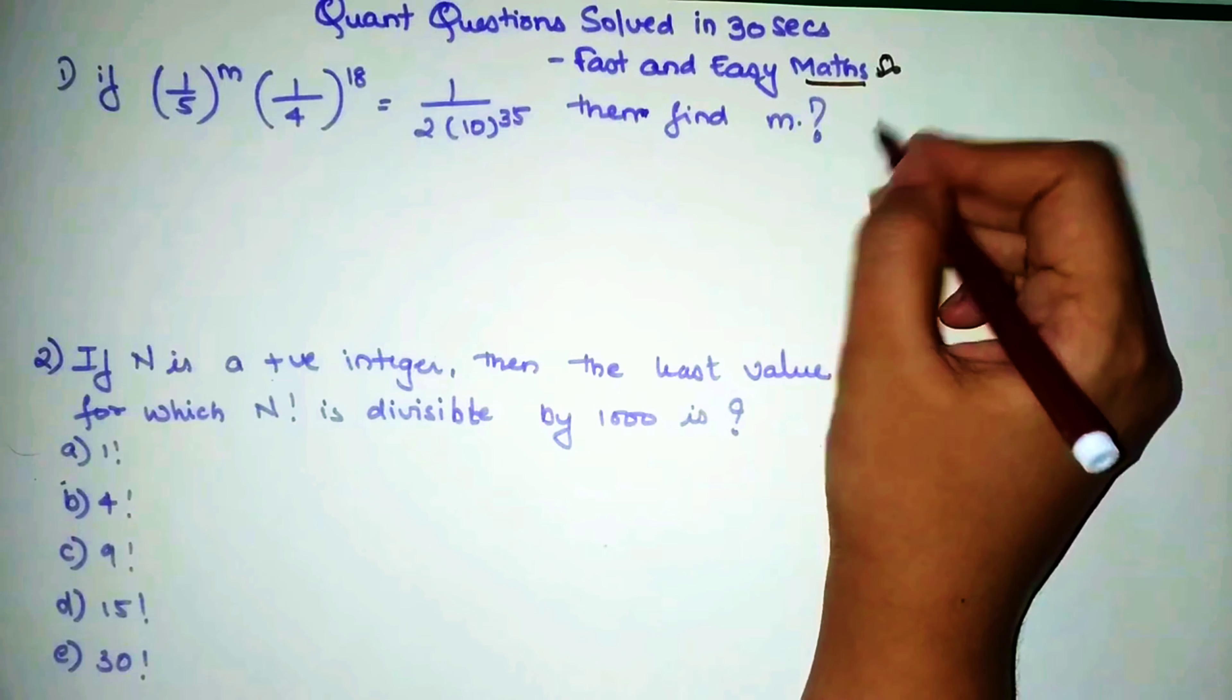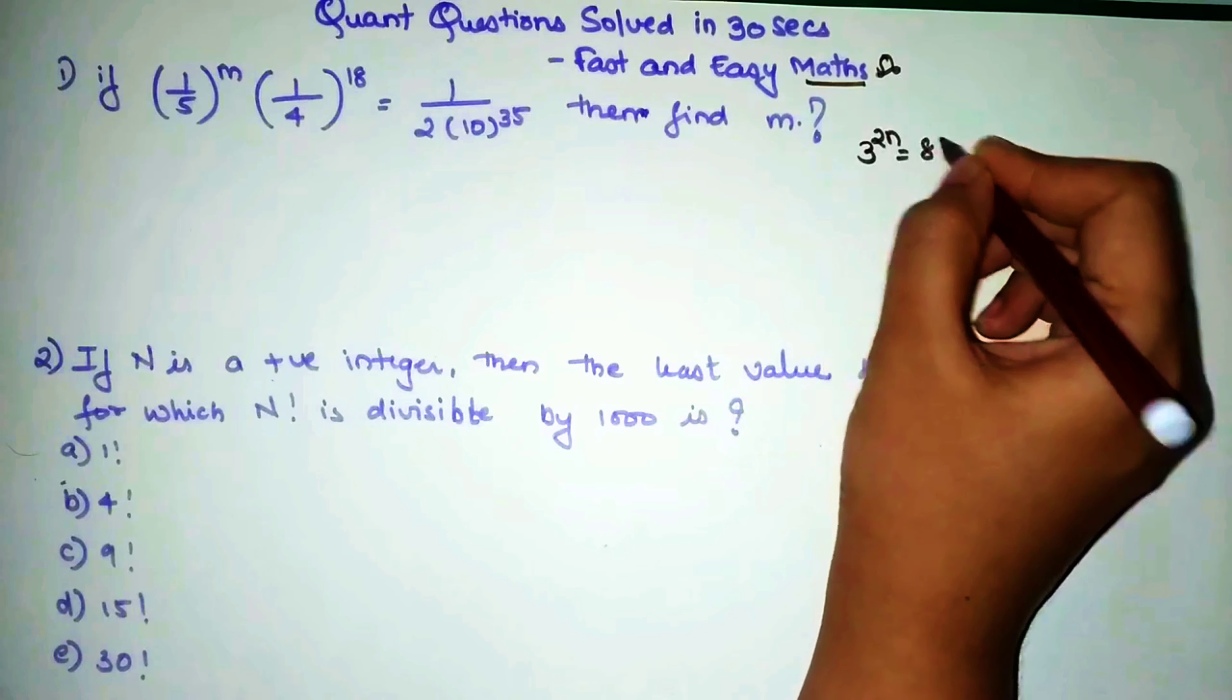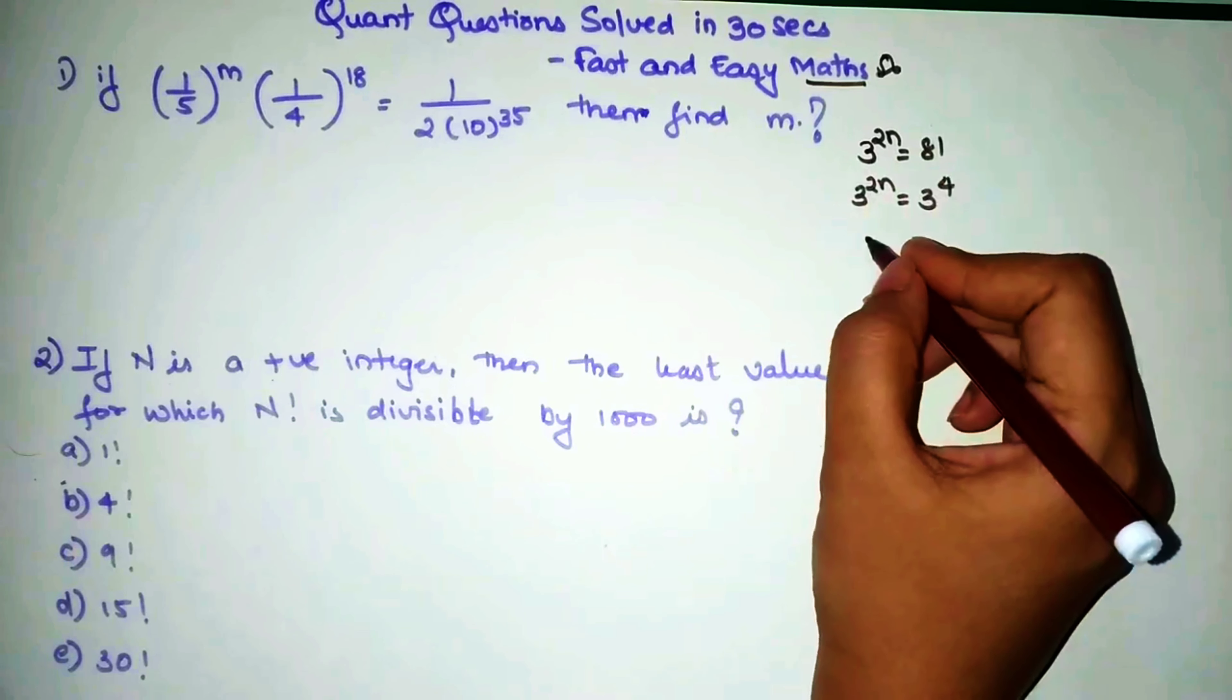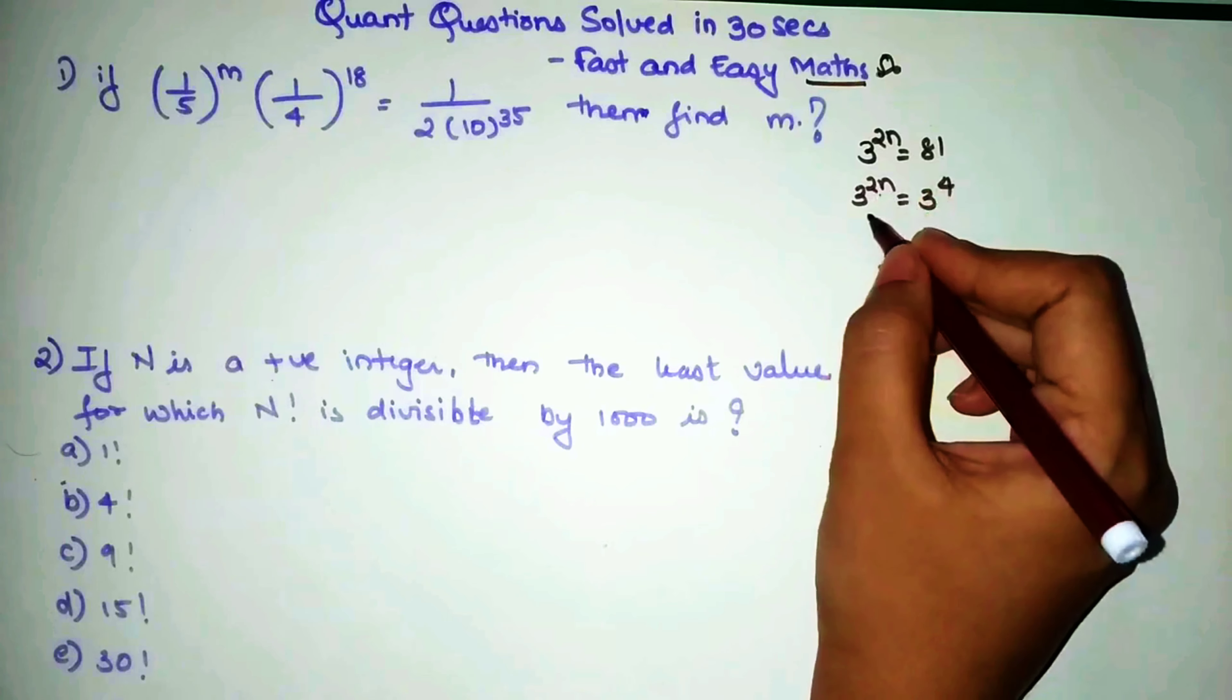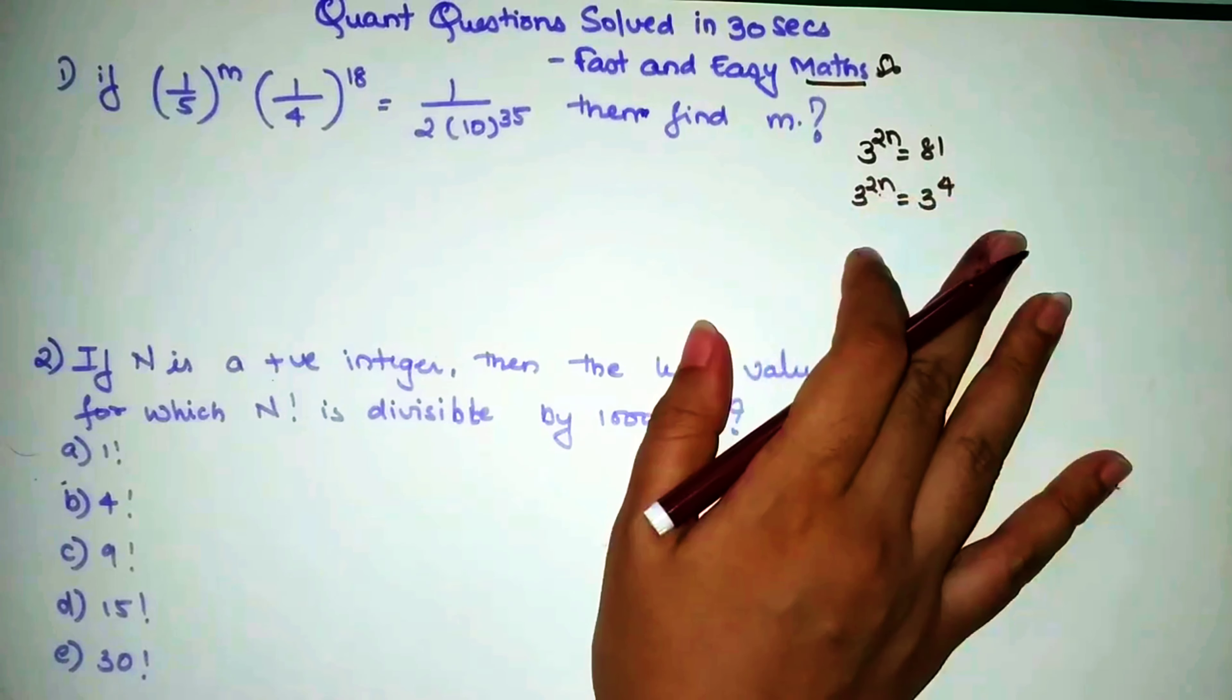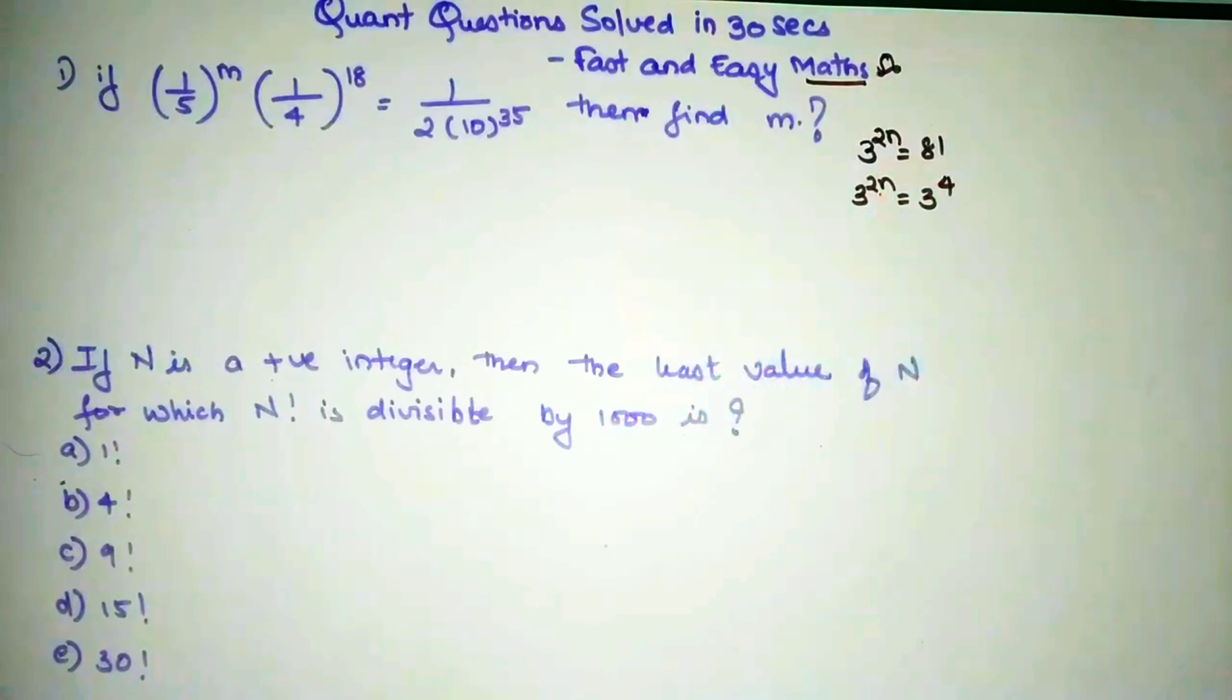So when you have, let's say, 3 raised to 2n equals 81, I can write this as 3 raised to 2n equals 3 raised to 4. So I can now directly compare 2n with 4. Why? Because both the bases have become same. Before that, you could not have done it. Please don't make the mistake of these certain basics of indices, students.